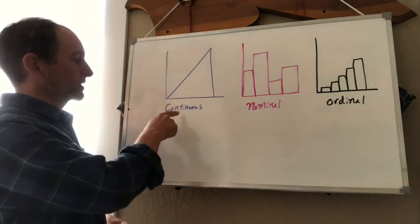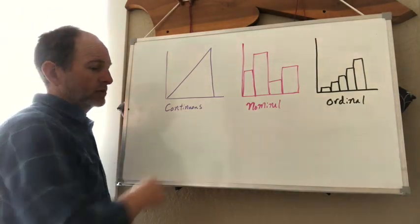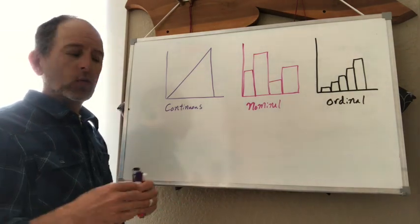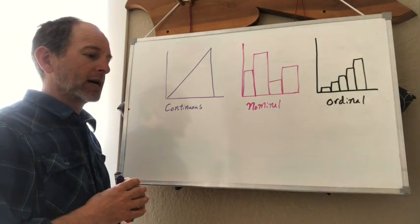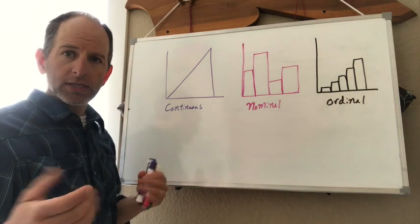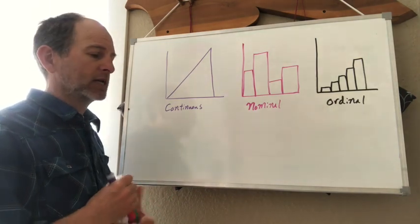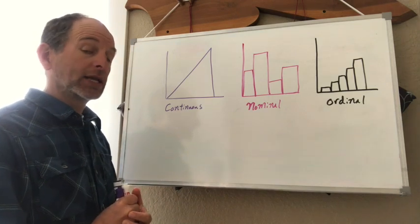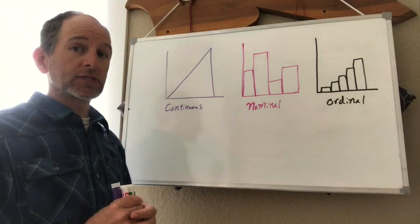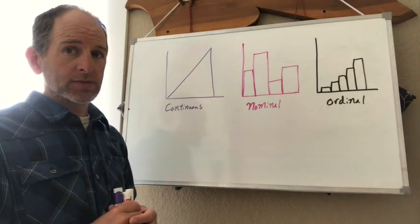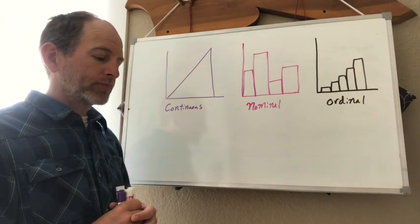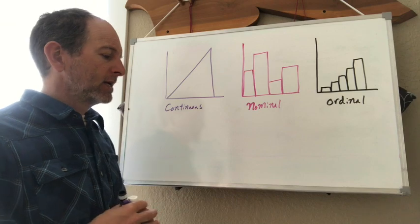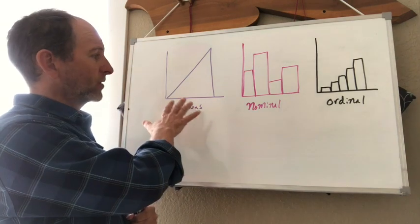So let's start with continuous data. Continuous data are just like it sounds, these are data that exist along the continuum where something like measurement of size of an organism is a continuous data set. Sometimes numbers of organisms can be treated like they're in a continuum when they're relative to size, if you have density of organisms per area when they're relativized to a sample size or area looked at. So continuous data are very common.